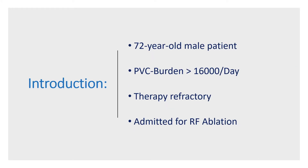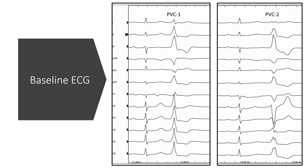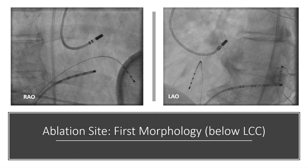The third patient is a 72-year-old man with a PVC burden over 60,000 PVCs per day who was admitted again for ablation at aortomitral continuity. In this patient, we also had two PVC morphologies; however, the difference between morphologies was more prominent compared to the previous patient. PVC one, which was much more common, showed right bundle branch block pattern with inferior axis, compatible with the left ventricular outflow tract. The second one had a right bundle branch block morphology, inferior axis, and an RS transition between V3–V4, which was even later than the transition zone in sinus rhythm. The first morphology was successfully ablated below the left coronary cusp, and here we see the RAO and LAO projection of the successful ablation site.